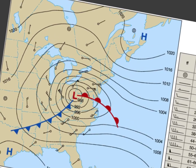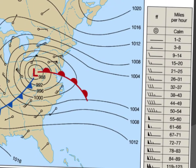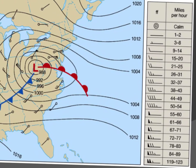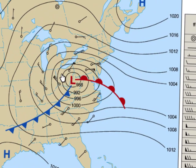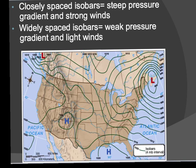Look at those little barbs — you should know exactly what those are. Those are parts of weather station models. You can see that the ones with the flags are actually the highest mile per hour winds, and those occur where the isobars are closest together. Your calmer winds exist where the isobars are further spaced apart. So again, closely spaced isobars means lots of wind, strong pressure gradient. Widely spaced isobars means very light wind, weak pressure gradient.